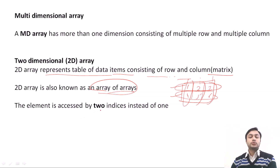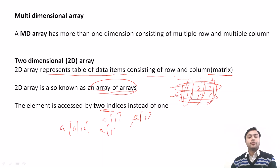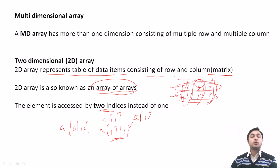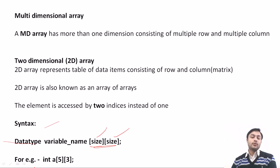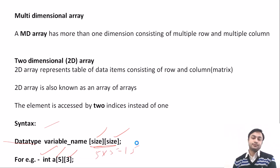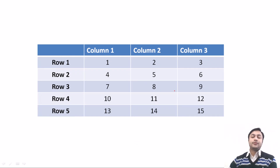The element in a 2D array is accessed using two index values. In one-dimensional it uses one index like a[1] or a[2], while in 2D it uses two indexes like a[0][0] or a[1][2]. The syntax for a 2D array is: data type, then variable name, then size1, size2. For example, int a[5][3] — the total number of elements is 5 times 3, which is 15 elements.